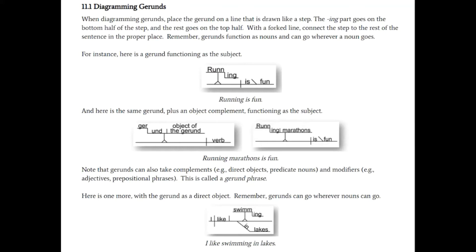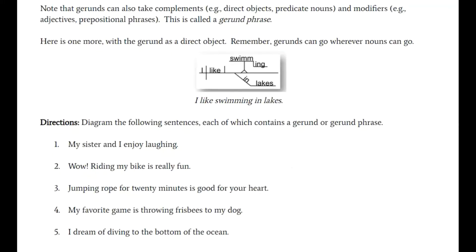'I like swimming in lakes.' Here the gerund is in the position of the direct object. It sits on a forked line with the -ing as always on the bottom step, and the rest of the word 'swim' on the top of the line. You'll see that this gerund, like any other noun, can be modified — in this case, modified with an adjectival prepositional phrase 'in lakes.'